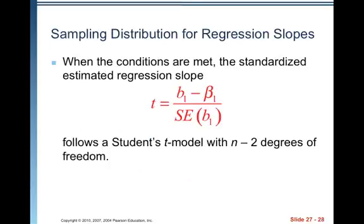When the conditions are met, the standardized estimate regression slope is T equals B1 minus beta 1 divided by the standard error of B1. And it follows a student's T, a student's T model with N minus two degrees of freedom because we have two variables, X and Y. So that's why it's N minus two.